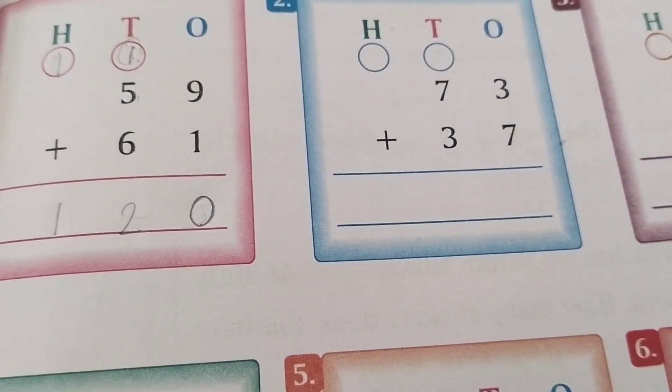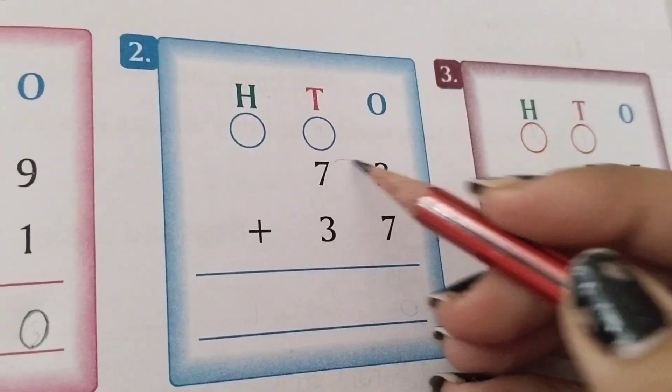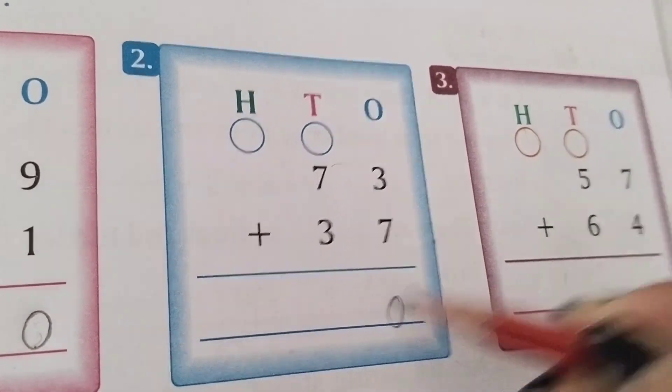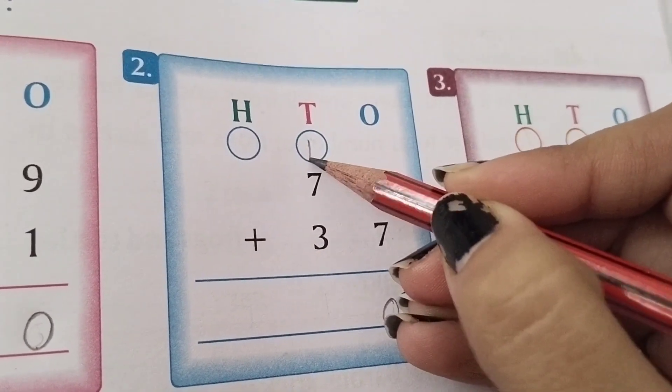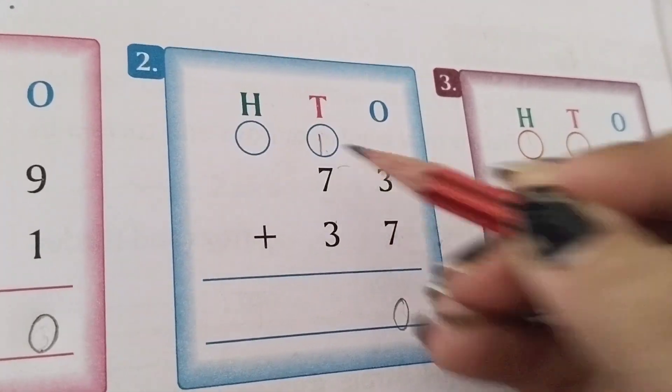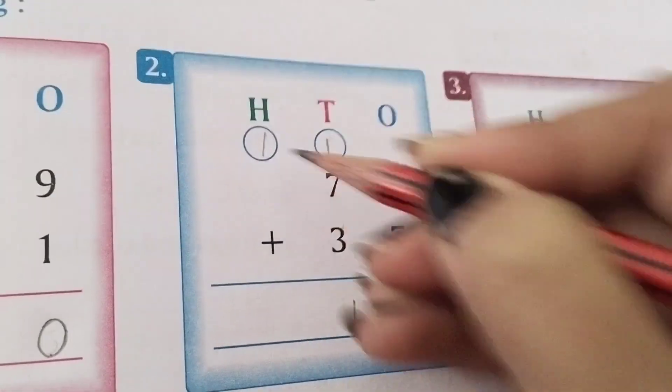Next we have 3 plus 7. It is 10. We write 0 here and 1 on top. Then 7 plus 3 equals 10, plus 1 equals 11. So 1 will come here and it will go down.